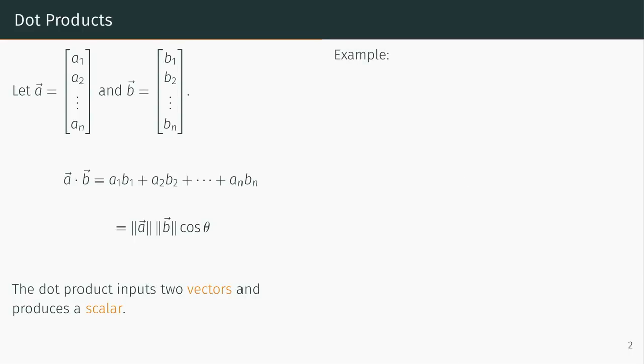Let's look at an example. Consider the vectors u and v given. Using the algebraic definition of the dot product, we compute the dot product of u and v as 4.